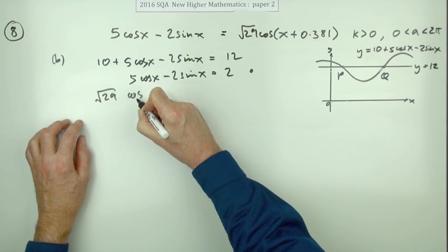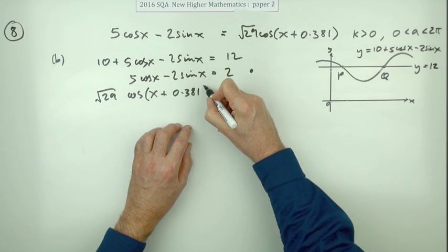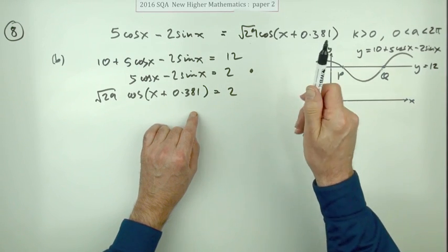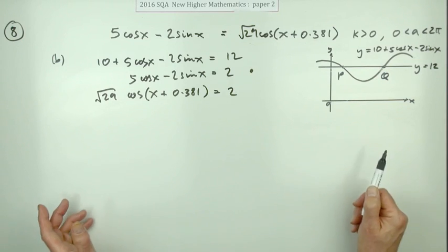Root 29 cos of x plus the angle (which should be in radians) equals 2. And look at the marking scheme: if you've got the angle in radians in part a, then your answer must be in radians in part b.